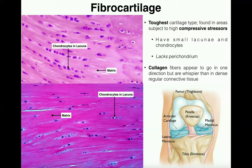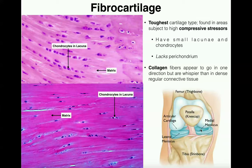The last type of cartilage is fibrocartilage, which is often confused with dense regular connective tissue. Fibrocartilage is the toughest cartilage type and is found in areas subject to high compressive stress. In your knees, the two menisci are fibrocartilage pads that cushion the tibia against the femur. We also have fibrocartilage between the vertebrae of the spine — it's very strong and cushions against compressive stress. Fibrocartilage does not have a perichondrium.